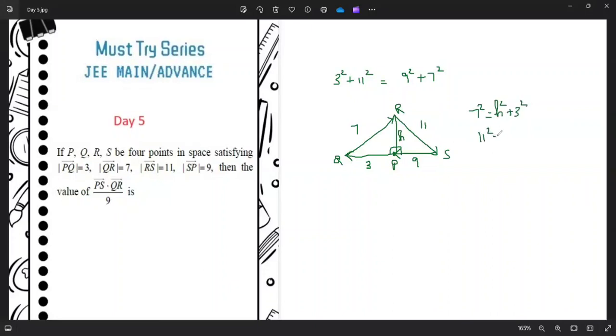And for the other triangle, 11 squared equals RP squared plus 9 squared. If I add the equations, I get back this information: 130 equals 130. So this diagram is correct to assume PQRS as four points in space satisfying the magnitude of PQ vector, QR vector, RS vector, and SP vector.